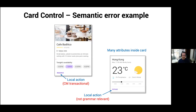Here's an example of a screw-up: About six months before the book came out, the Google Material team got wind of the book and the semantic interaction design approach. They only really claim to be a visual design system, not an interaction design system. Here's an example from their card control. We have a card representing the object of a cafe, and at the bottom of the card there's a local action: Reserve — a transactional action where money changes hands. Then we have a card showing attributes — the weather in Hong Kong — and a local action, Expand, which is not grammar-relevant and not transactional. These two actions have the same position, same color, same font, same case. This is an interaction screw-up because they are not equivalent cases.